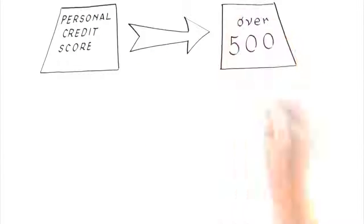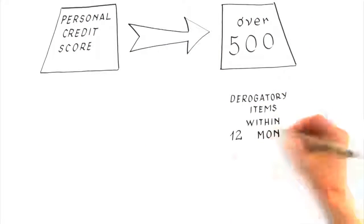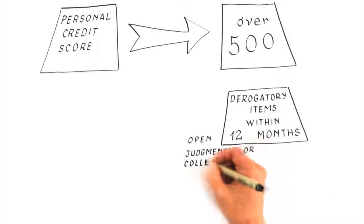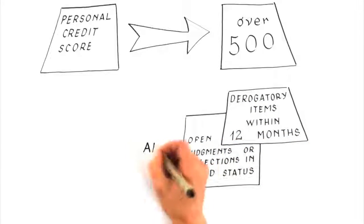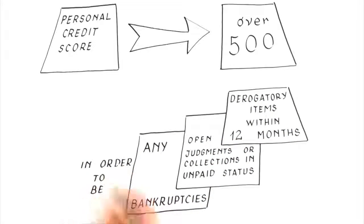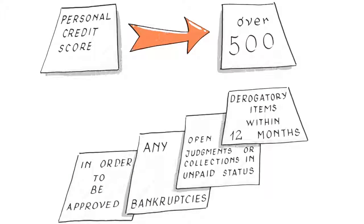To qualify, your personal credit scores should be over 500 and shouldn't have any derogatory items on your credit report within the last 12 months. Your credit should also not have any open judgments or collections in unpaid status, and you shouldn't have any bankruptcies on your credit report to be approved.